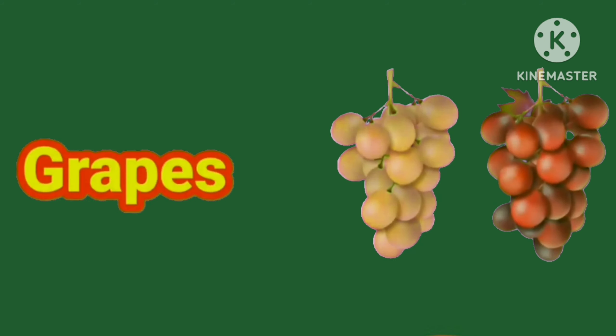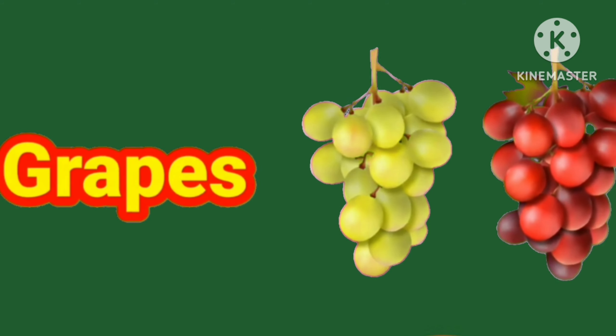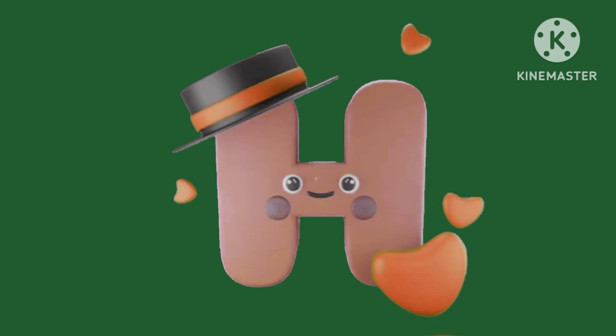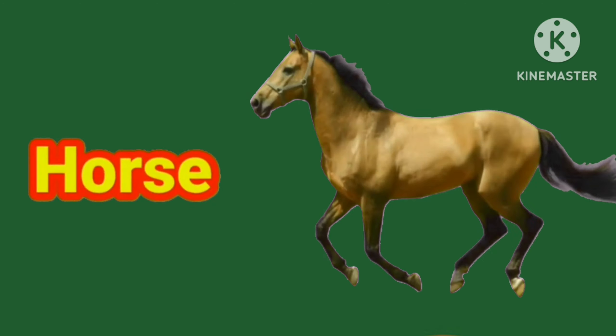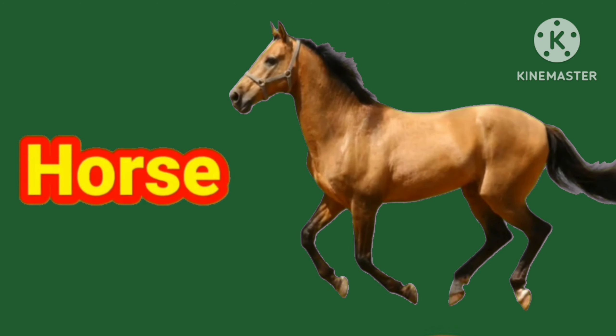G is for Grapes, G R A P S, Grapes. H is for Horse, H O R S E, Horse.